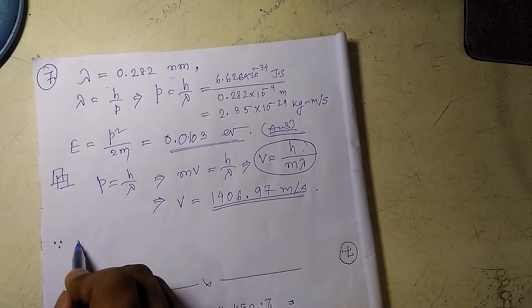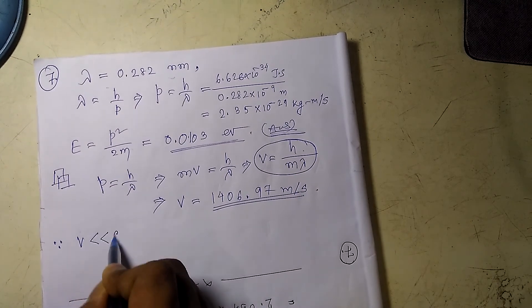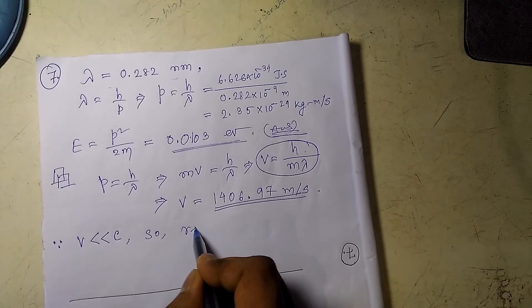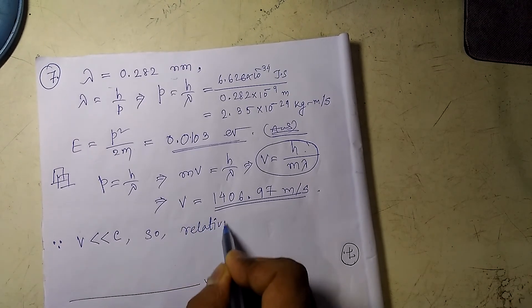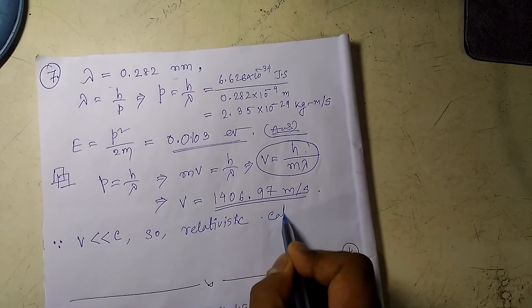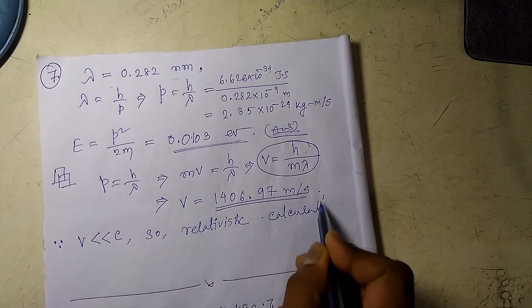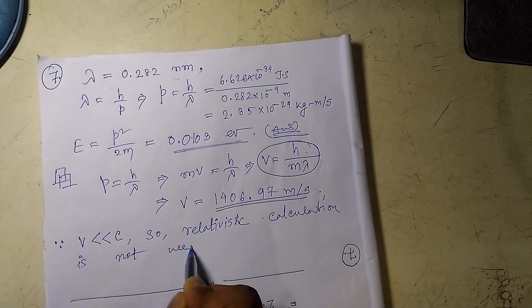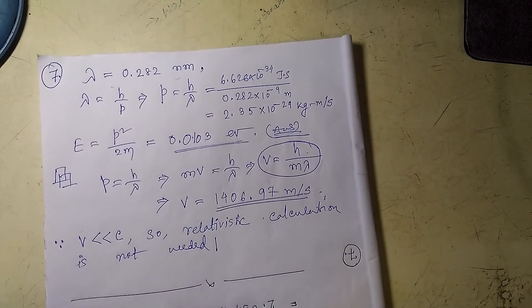So what is the conclusion? As V is very very less than C, so relativistic calculation is not needed.